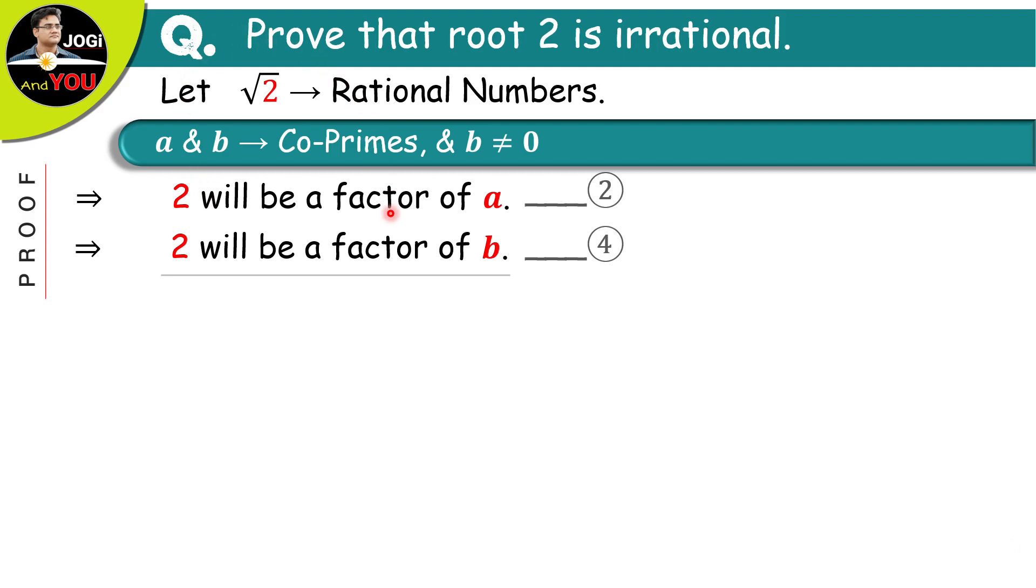Now, look at this information carefully. The first thing we have is that we considered root 2 as a rational number and a and b we had as coprimes. That means there is no common factor between a and b. Also, what are the next two facts we have?